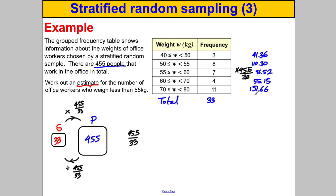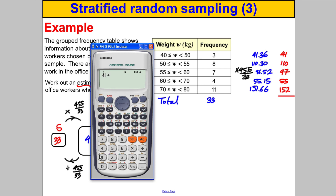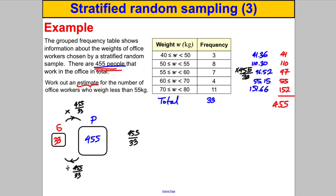In the population you can't have decimals, so we round appropriately: 41, 110, 97, 55, and 152. We check these add to 455 — and indeed they do. The question asks for an estimate of workers weighing less than 55 kg, which covers the first two categories. Adding 41 and 110 gives an estimate of 151 people weighing less than 55 kilograms. The reason it's an estimate is because rounding was involved.